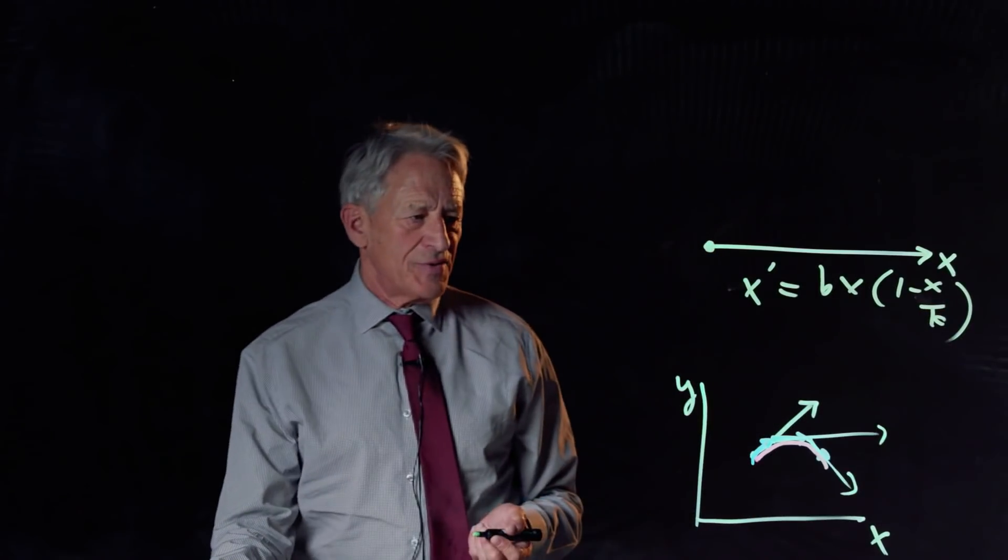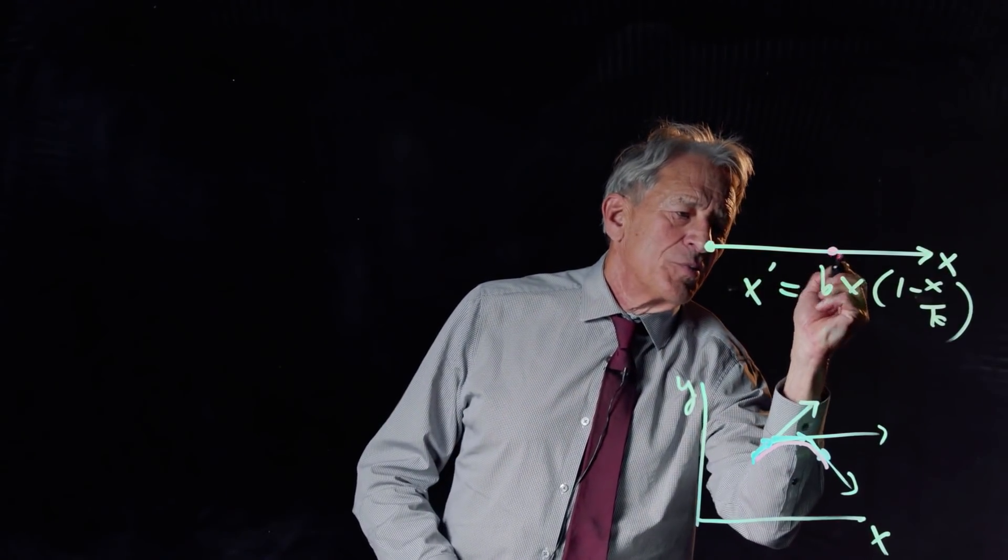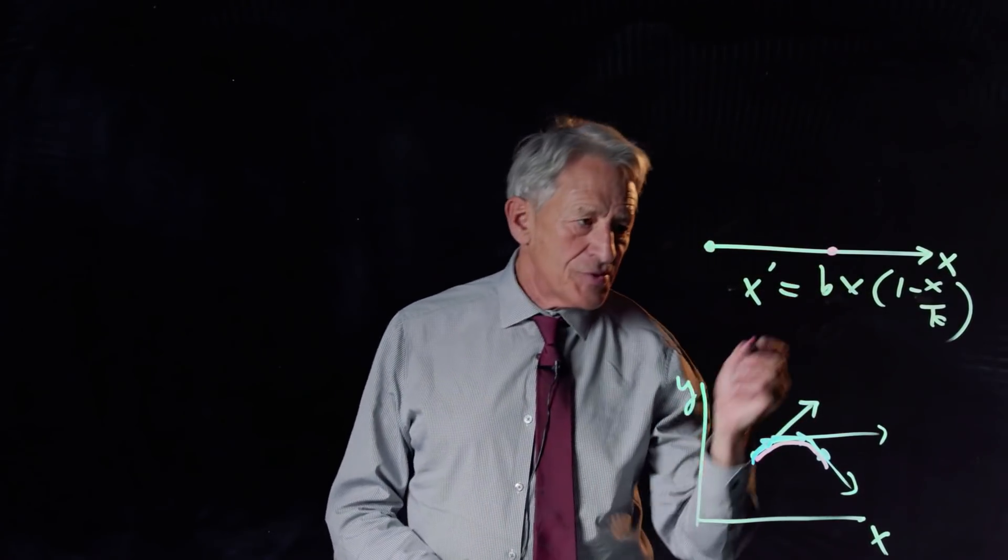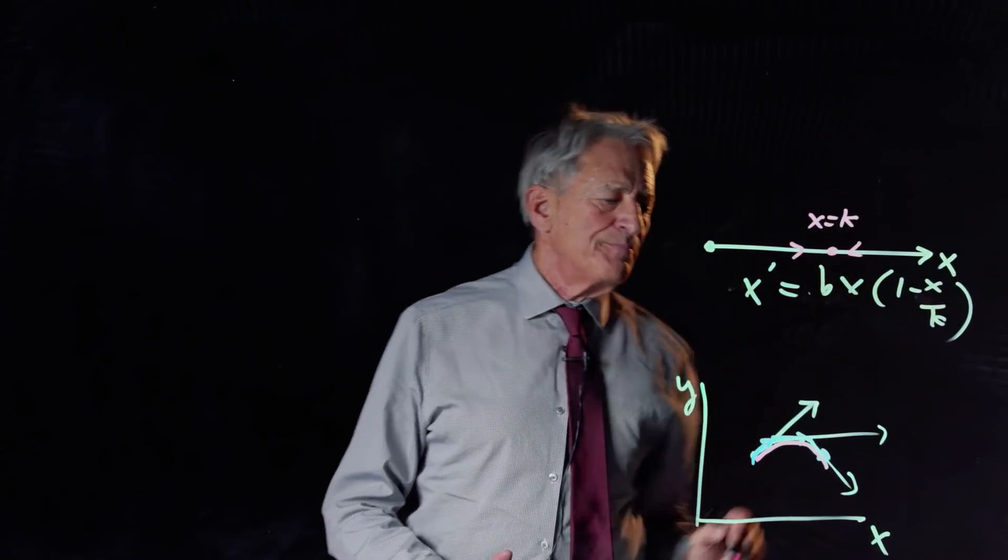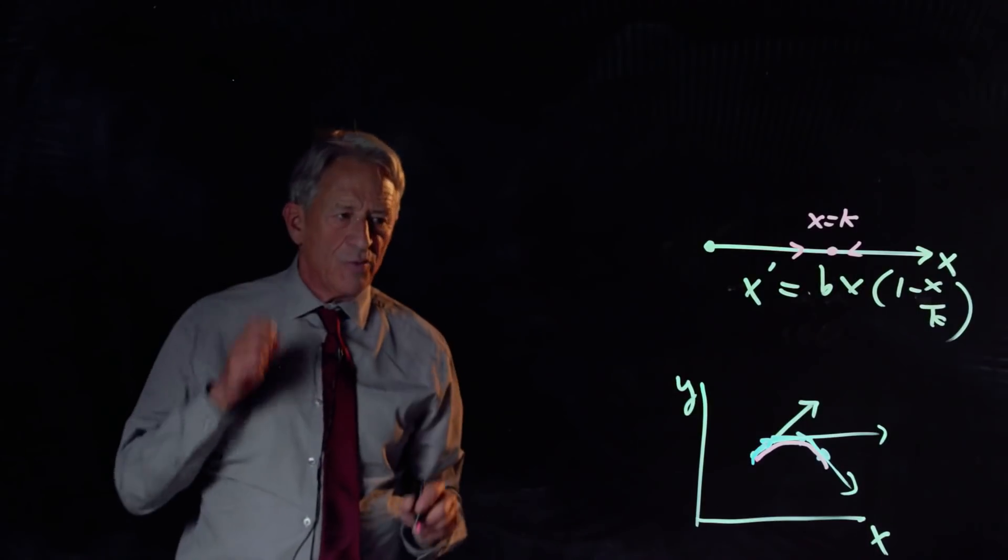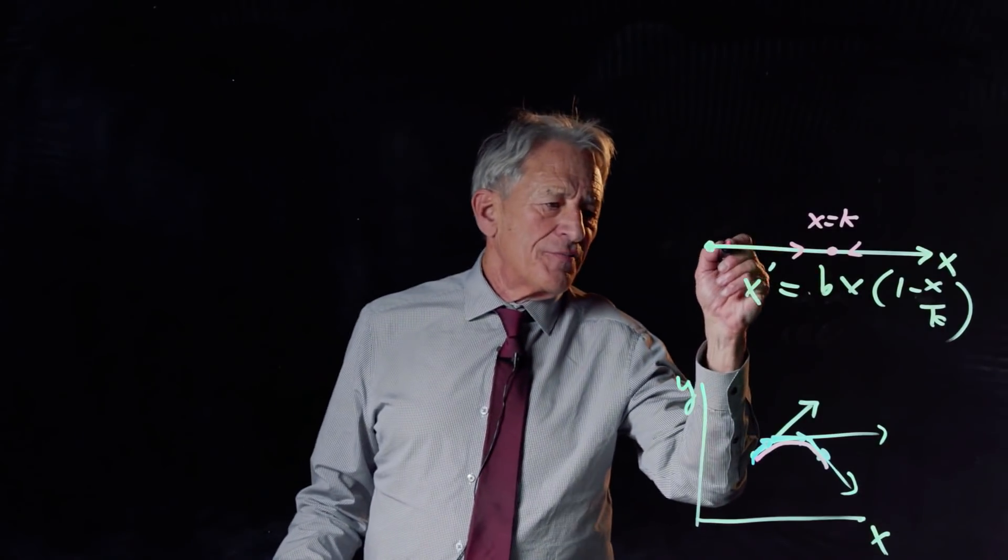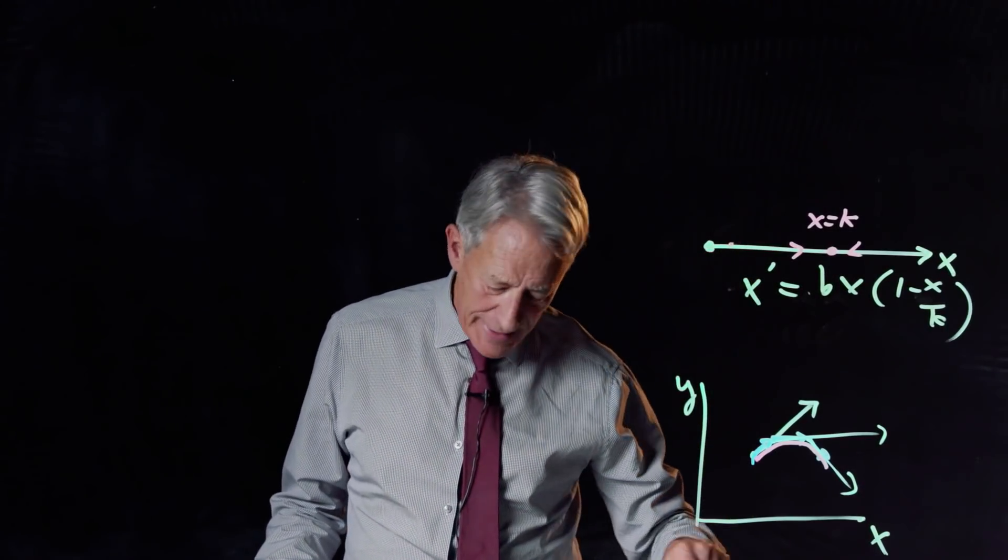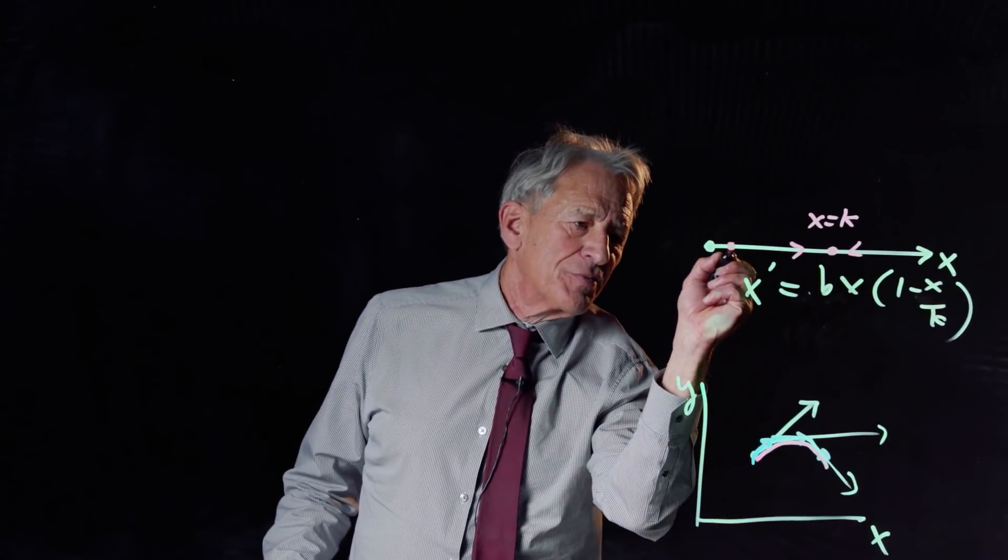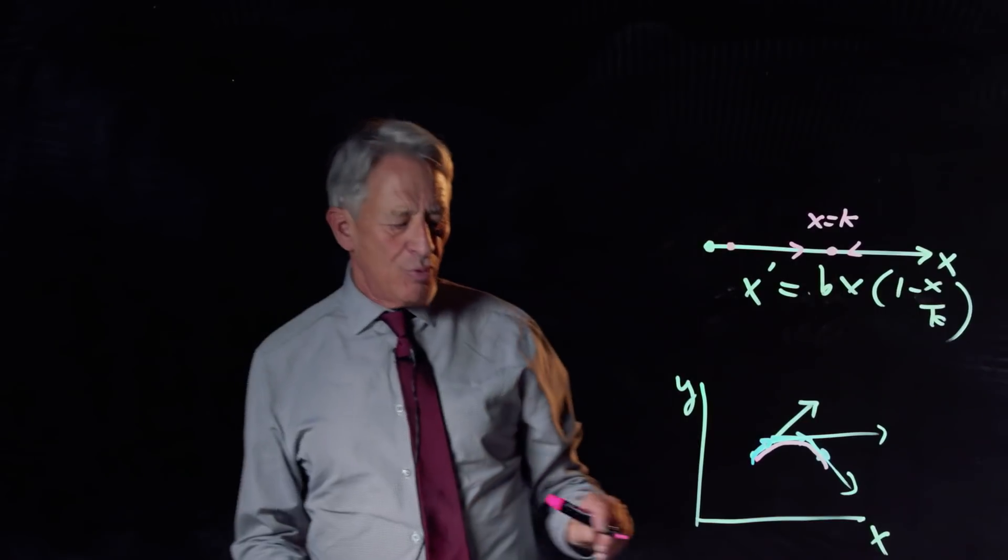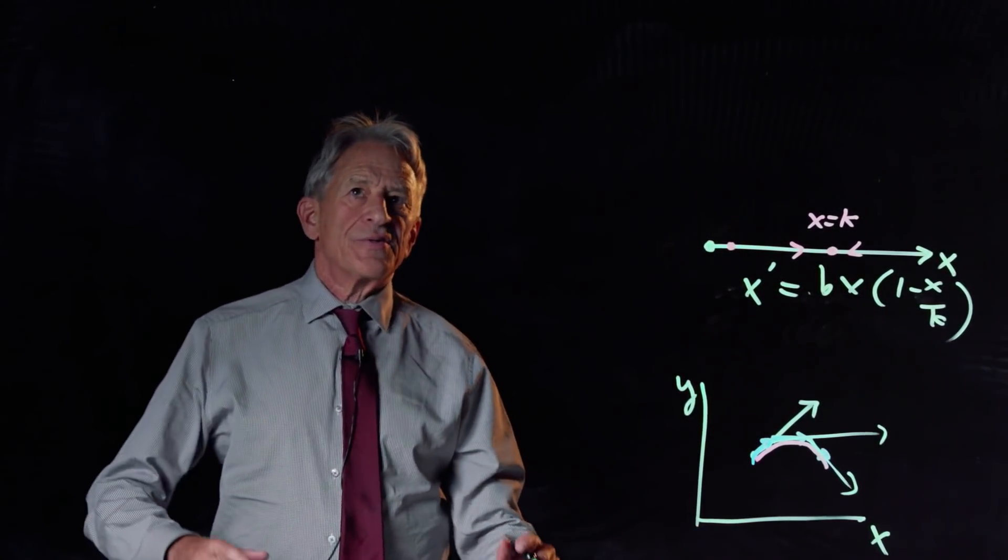where k is the carrying capacity. And this system, as we saw, has a trajectory that looks like that, where this is x equals k. It approaches equilibrium at the carrying capacity. And now we're just going to start from a random point there, call it x0. And we want to approximate the trajectory forward from that point. So we're going to do it as a spreadsheet.